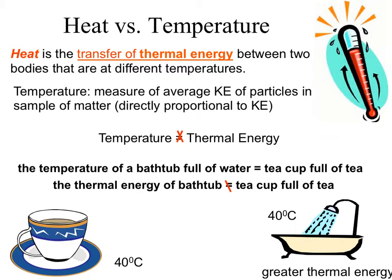Heat versus temperature: heat is the transfer of thermal energy between two objects or bodies at different temperatures. We always go from high heat to lower heat — that's the natural flow of thermal energy. Temperature, on the other hand, is the measure of the kinetic energy of the particles in whatever sample of matter we're looking at, and the temperature you measure on a thermometer is directly proportional to kinetic energy.